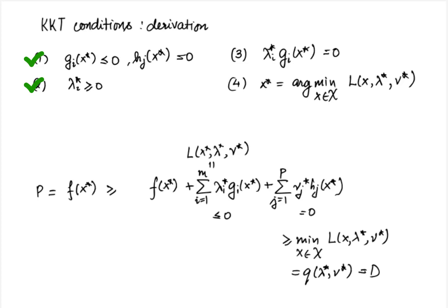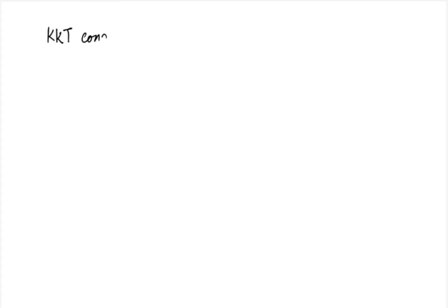Let us look at them one by one. First, the upper bound: the third term is always zero from primal feasibility. Each summand in the first term is less than or equal to zero, because g_i of x-star is less than or equal to zero and lambda_i-star is greater than or equal to zero. So if p equals d, the only possibility is that the sum is zero — and in fact each summand must be zero, or else things would add up to something negative. This condition is exactly the complementary slackness condition, and we have finally established the KKT conditions.